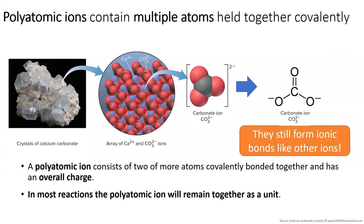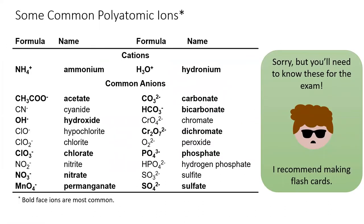Some ions are composed of multiple atoms held together by covalent bonds — these are called polyatomic ions. In most reactions, the polyatomic ion will stay together as one unit. This is the worst part of today's lesson: you will need to memorize these polyatomic ions. It's extremely important since polyatomic ions are common in chemical compounds and reactions in this course. I highly recommend making flashcards for everything on this slide.